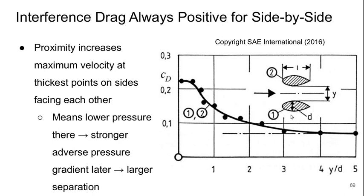So basically as y over d, where d is the width of the body, increases eventually when it gets large enough, there's essentially no influence. But as the proximity increases, the drag coefficient rises.